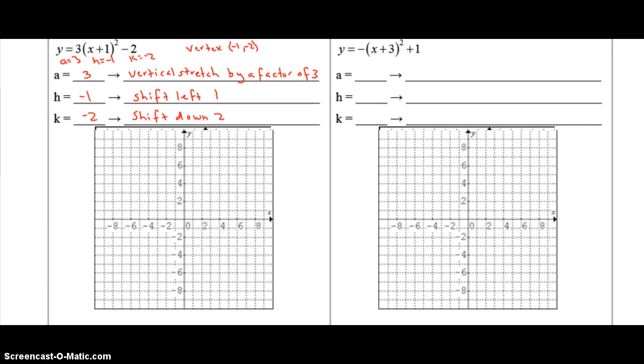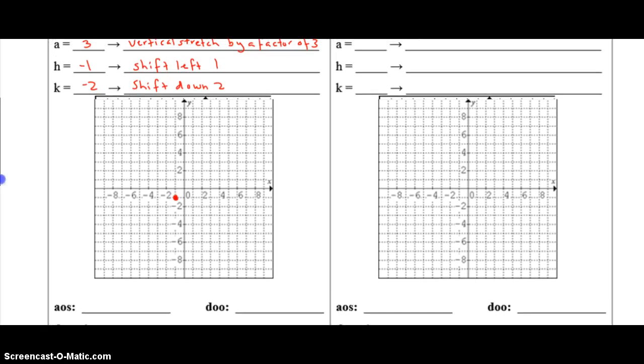First thing, plot the vertex, negative 1, negative 2. Second thing, multiply your steps. Your steps of 1, 3, 5, 7 will be multiplied by 3. So that will give 3, 9, 15, etc.